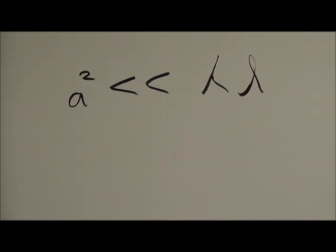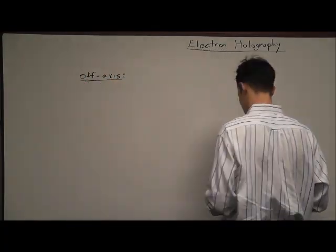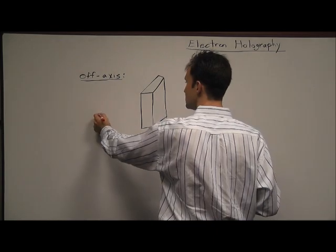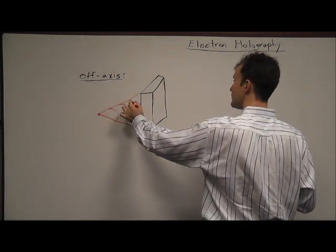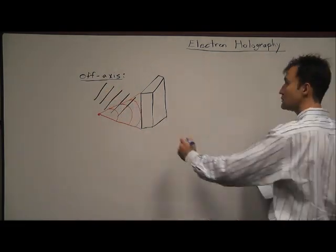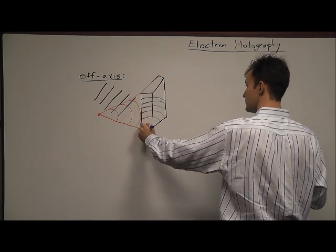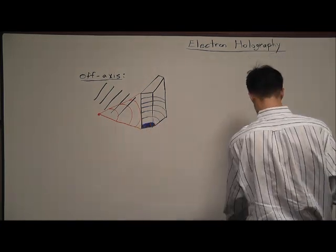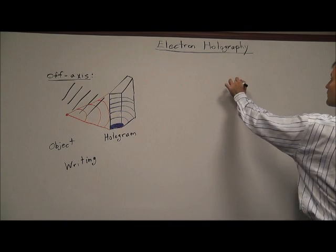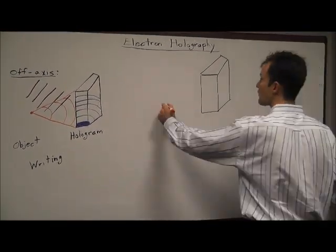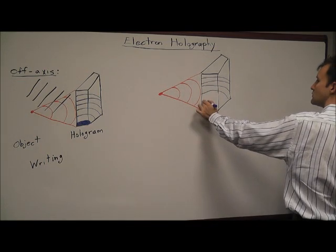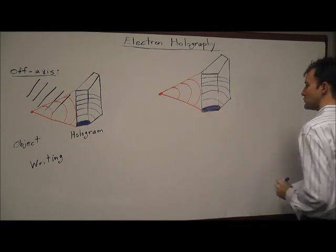Now let's look at writing and reading an electron hologram for the off-axis case. Here, the object wave is the same as inline holography. But the reference wave comes at the hologram plane at an angle and never passes through the object itself. The interference pattern produced appears sinusoidal.